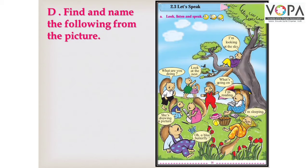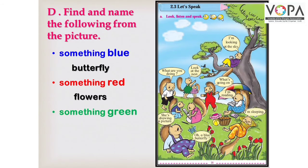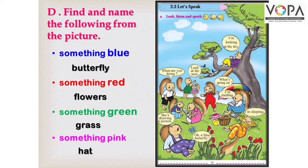Page number 18, Point D: Find and name the following from the picture. बच्चों, आपको यहाँ पर कुछ तलाश करना है और उनके नाम बताना है। Something blue — देखो बच्चों इस तस्वीर में blue क्या-क्या नज़र आ रहा है, जैसे Butterfly। Something red — लाल रंग क्या है? Flowers। Something green — हरे रंग क्या है? Grass। Something pink — गुलाबी रंग क्या है? Hat — देखो बच्चों यहाँ hat है, वो गुलाबी रंग की है।